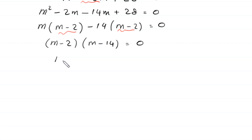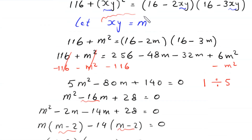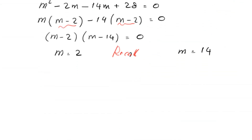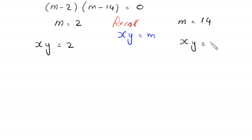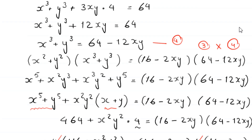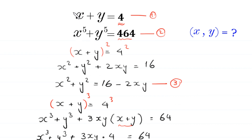This quadratic equation is factorable. We split negative 16m as negative 2m minus 14m. Factoring: m times m minus 2, minus 14 times m minus 2 equals 0. So m minus 2 times m minus 14 equals 0. From here we get two values of m: m equals 2 and m equals 14. Recall that xy equals m, so xy equals 2 or xy equals 14.